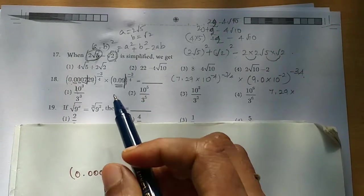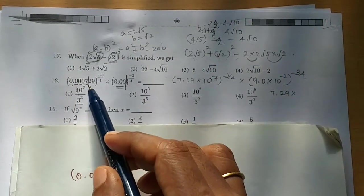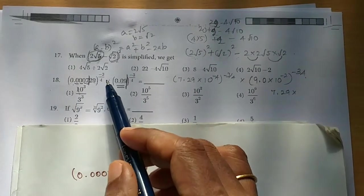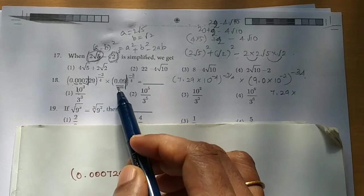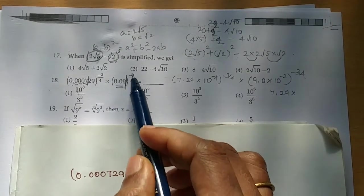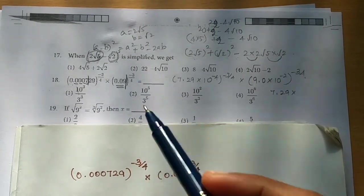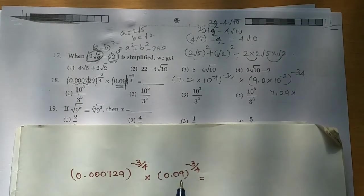So the 18th sum is equal to 0.000729 the whole power minus 3 by 4, into 0.09 the whole power minus 3 by 4. So now I have the sum here.